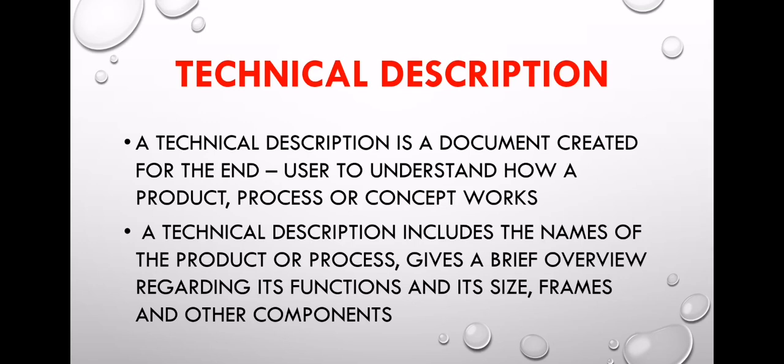A technical description includes the name of the product or process, gives a brief overview regarding its functions, its size, frames, and other components. There are different kinds of technical descriptions, covering product name, process, function, brief overview, and size of frames and other components.